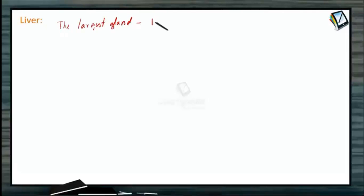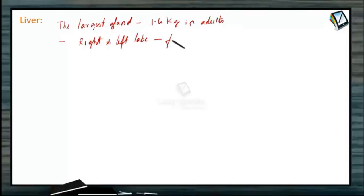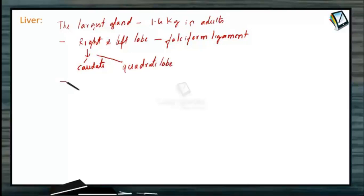Liver is the second largest organ and the largest gland in the human body. It weighs about 1.4 kg in adults. The liver is divided into two lobes — right lobe and left lobe — by a ligament called the falciform ligament. Anatomically, the right side is further divided into a caudate lobe and a quadrate lobe. This liver hangs from the right side below the diaphragm and is made up of several lobes, each divided into lobules covered by a connective tissue called Glisson's capsule.